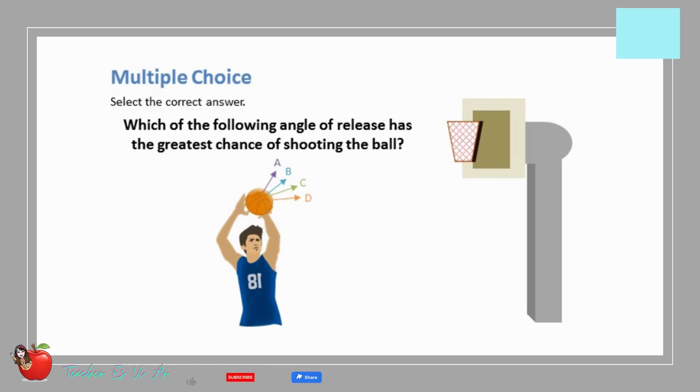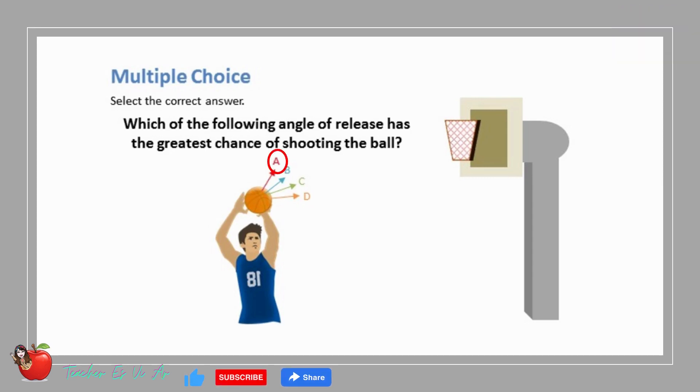Multiple choice, select the correct answer. Which of the following angle of release has the greatest chance of shooting the ball? The correct answer is A.